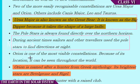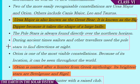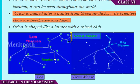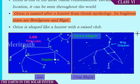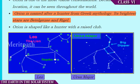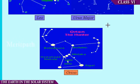Orion is one of the most visible constellations. Because of its location, it can be seen throughout the world. Orion is shaped like a hunter with a raised club. Here we can see the constellations — this is Leo, this is Ursa Major, and now we will see Orion. Here you can see the shape of Orion, shaped like a hunter with a raised club.